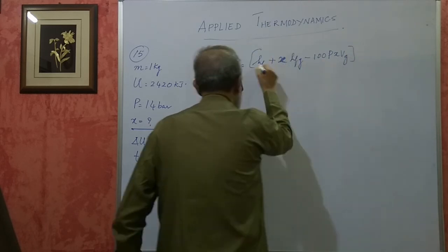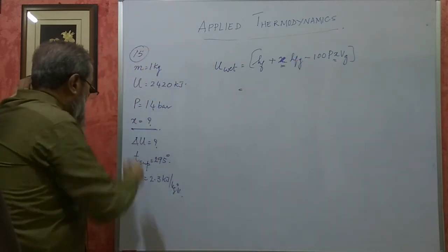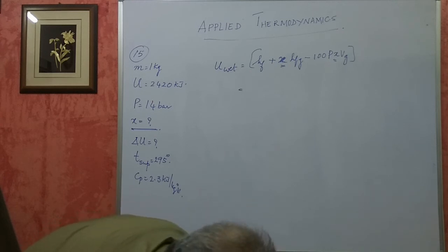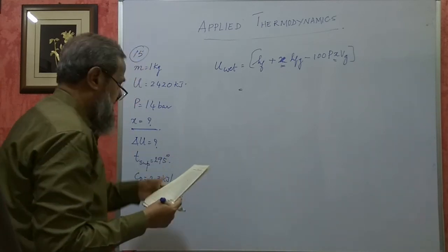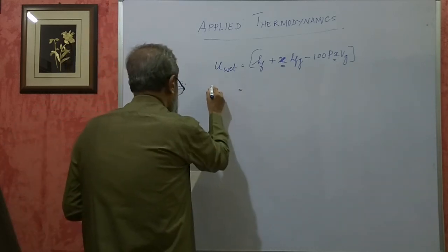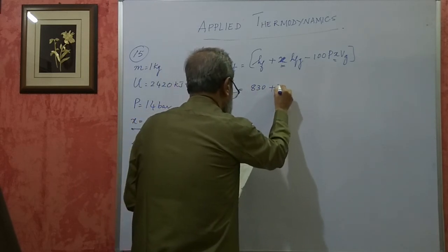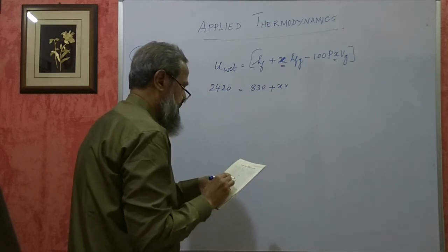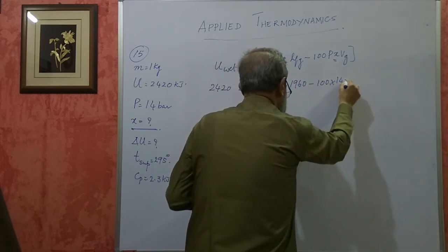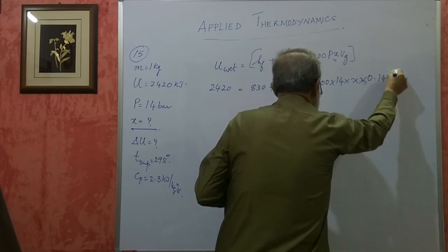The formula is: U_wet = HF + x · HFG - 100 · P · x · VG. For 14 bar: HF = 830, HFG = 1960, VG = 0.1408. Setting U = 2420: 2420 = 830 + x · 1960 - 100 × 14 × x × 0.1408. These two x terms cannot be directly added.